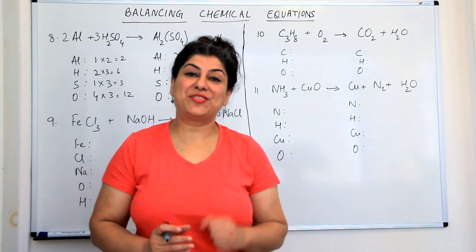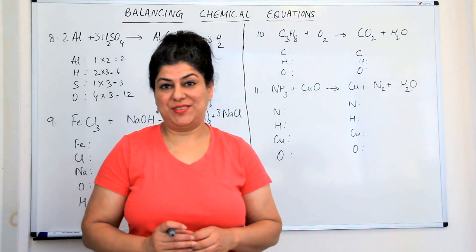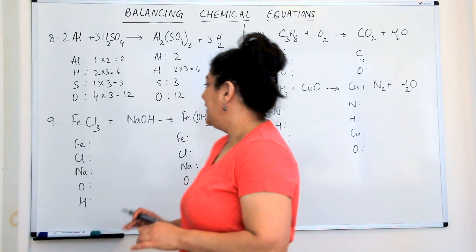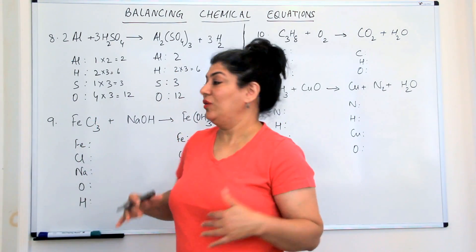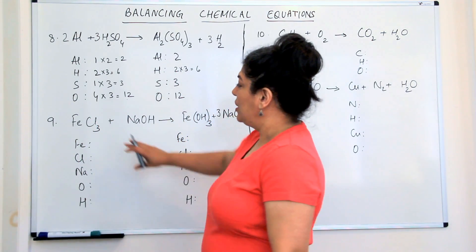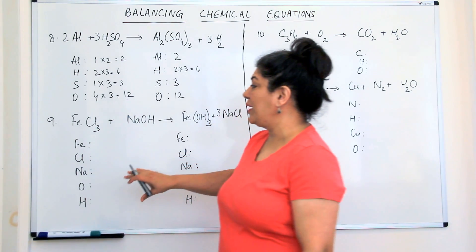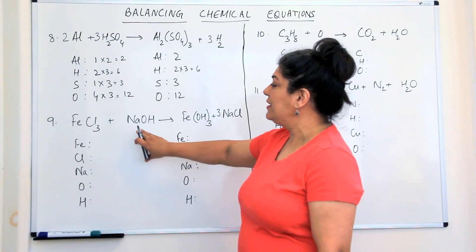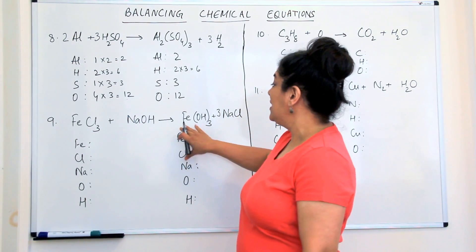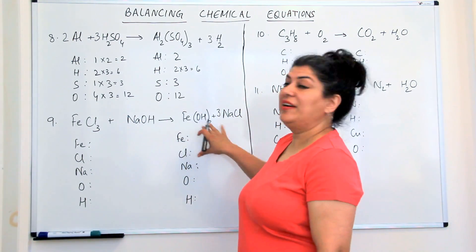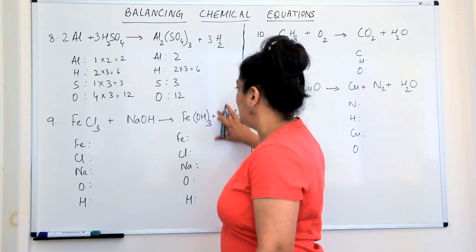Thank you for returning for part 3 of balancing of chemical equations. Let us move on with solving our problems. We now come to this equation where we have iron chloride, ferric chloride, combining with sodium hydroxide to give us ferric hydroxide and sodium chloride.